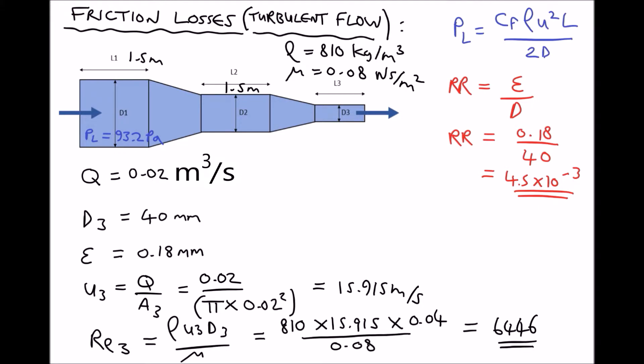So we just found using the Moody diagram that our coefficient of friction, or our friction factor as it's also known, is 0.042. Therefore, from the Darcy equation, we know that our pressure loss is Cf, 0.042, times our density, 810, times our velocity squared, 15.915 squared, times our pipe length. Now, although we haven't labeled this on the diagram, we'll call this 1.5 meters, so that we have a point of comparison with the pressure loss in the first section of the pipe. And we're going to divide by 2 times the diameter, remembering to convert our diameter to meters, so 0.04.